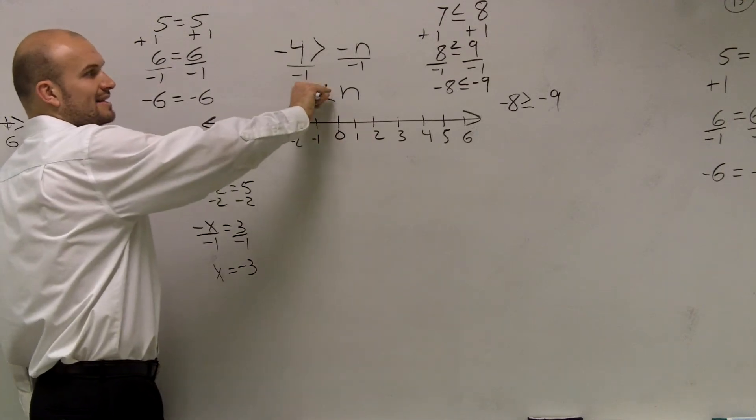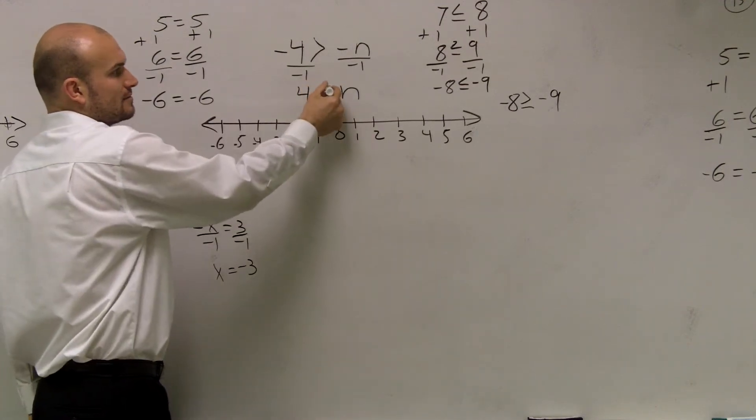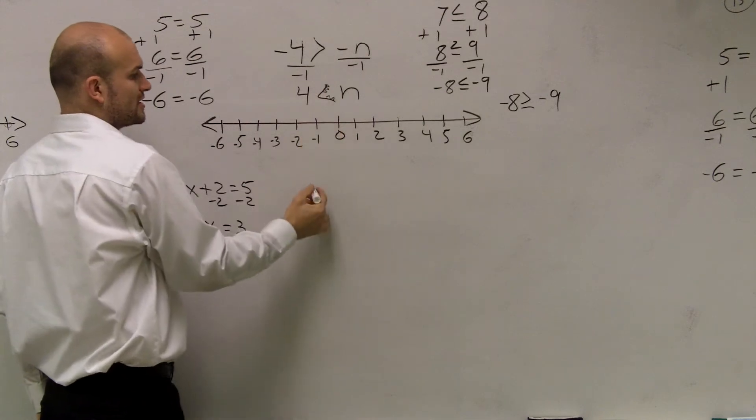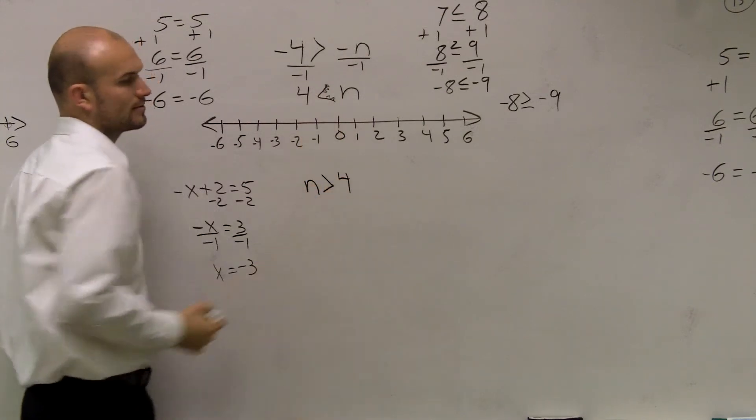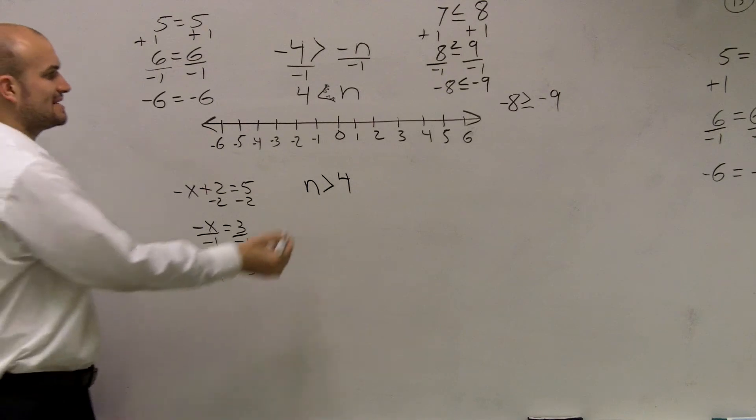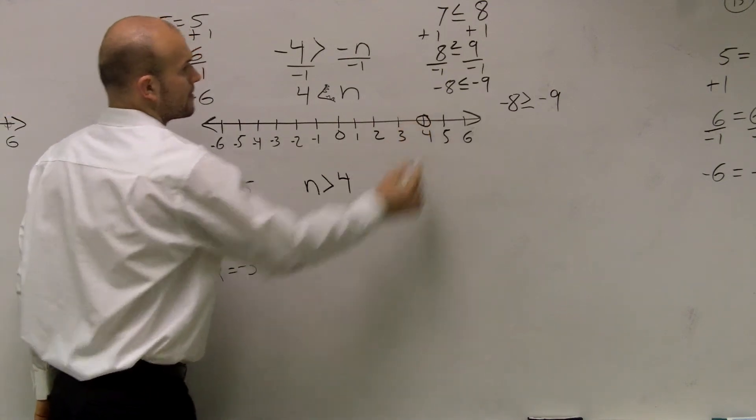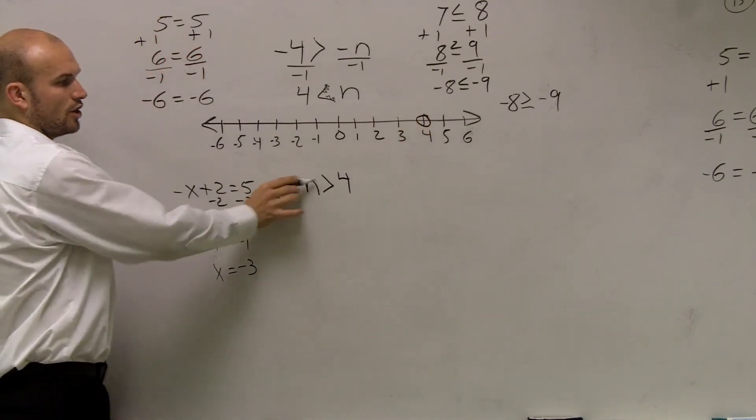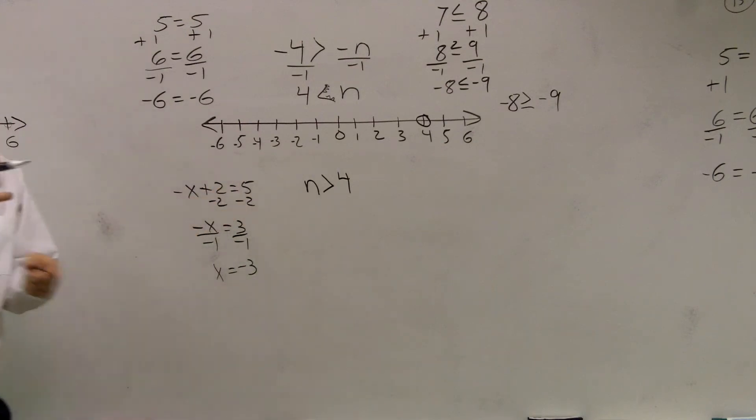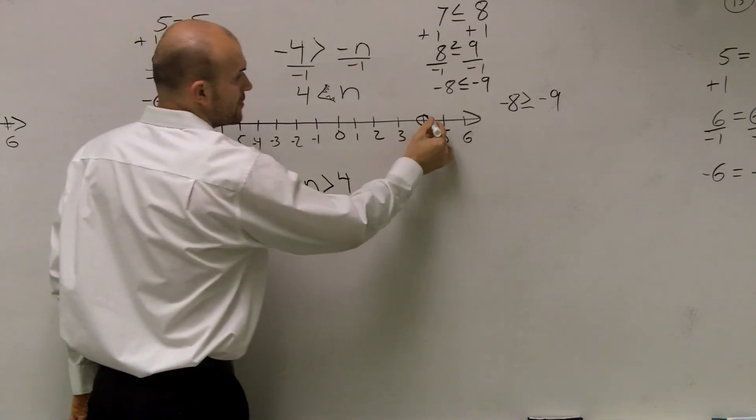Notice my inequality sign is eating the n. You could say like the alligator teeth. So you could say n is greater than 4. Then you make a big dot at 4, and you say all numbers that are greater than 4, which would be 5, 6, 7. So you go in this direction.